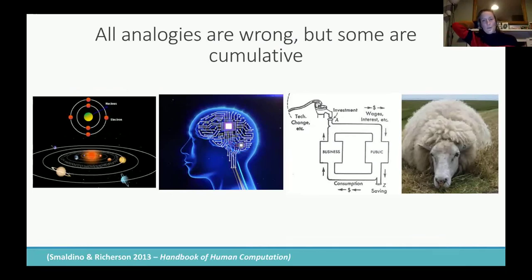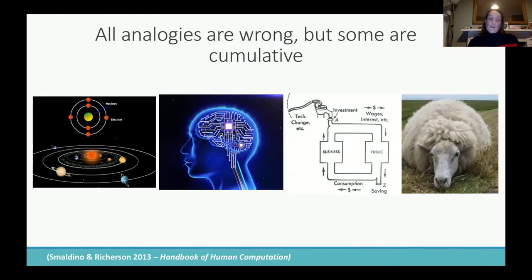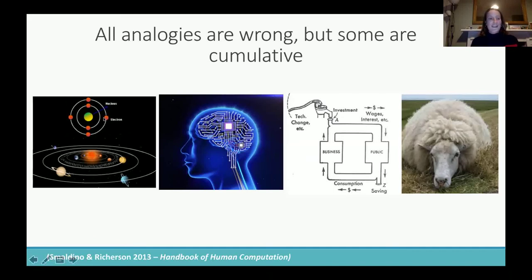Just to end with this quote from the paper — riffing off 'all models are wrong but some are useful' — we want to say that all analogies are wrong but some are cumulative. We use analogies to model the world all around us, and we build on these models over time. This is very salient in science history and science communication: it's very common to teach kids about atoms, nuclei, and electrons in relation to solar systems, something they've probably already learned about at that point.